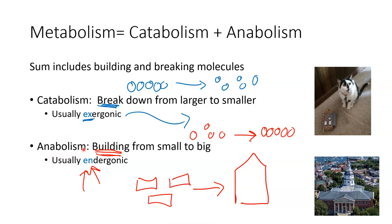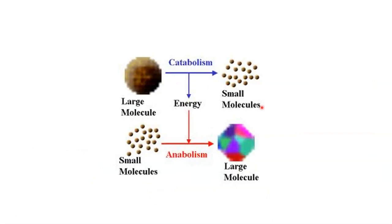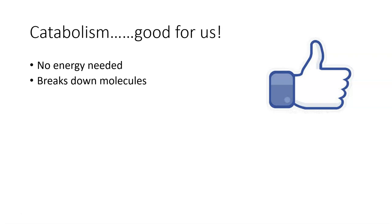This diagram bridges everything together. It shows a large molecule undergoing catabolism — breaking down from large to small. In this reaction, energy exits. In anabolism, energy first has to enter — shown by a red arrow going into the reaction — and anabolism is where we build something from small to large. This picture nicely puts catabolism and anabolism together.